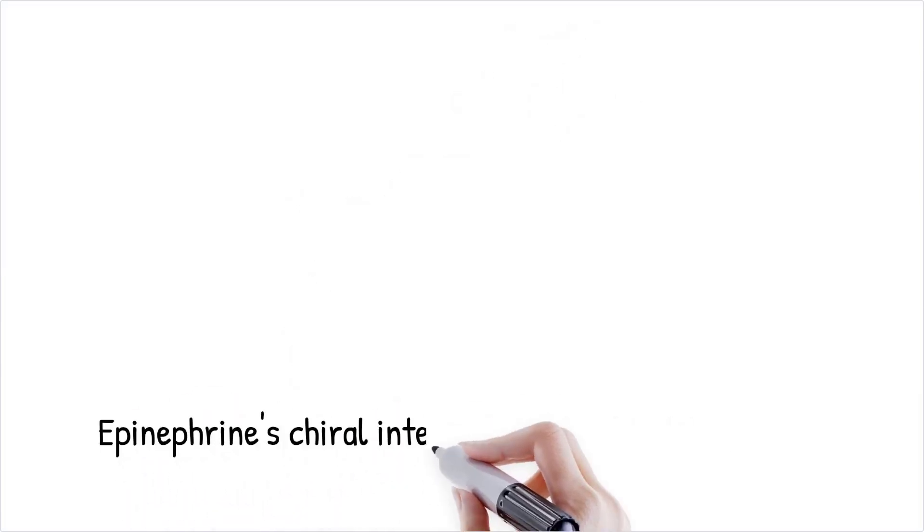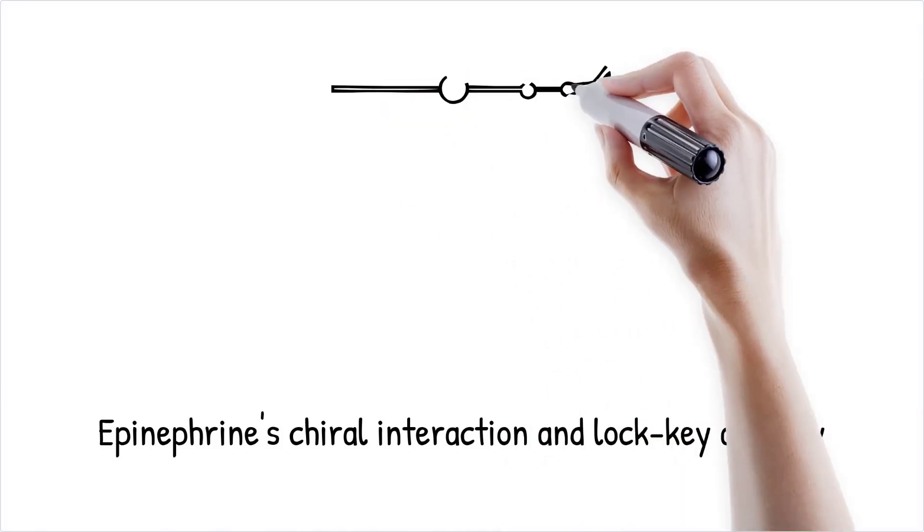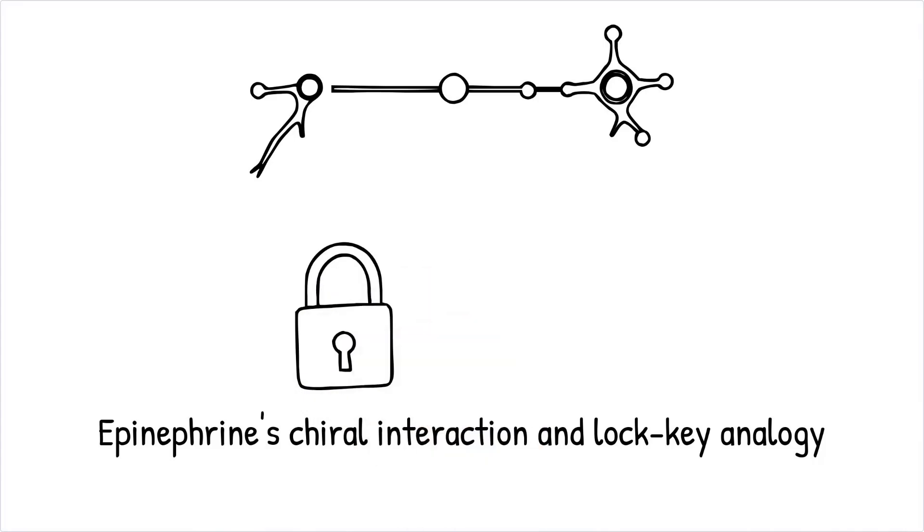The hormone epinephrine (adrenaline) exists in two chiral forms, but only one interacts effectively with its receptors to trigger the fight-or-flight response. Chirality in biology is like a lock and key—only the correct key, the molecule with the right chirality, can fit into the lock, the enzyme or receptor.